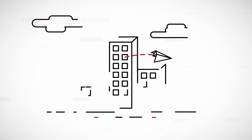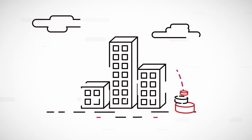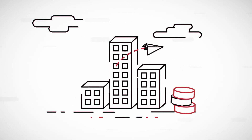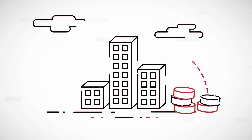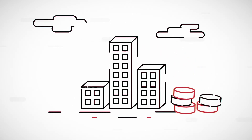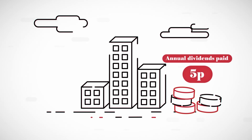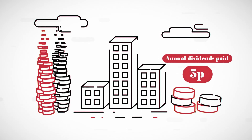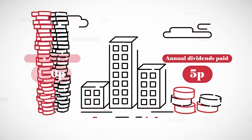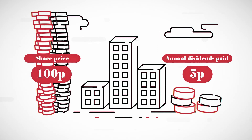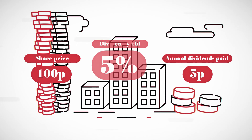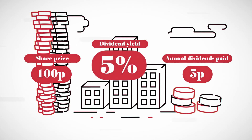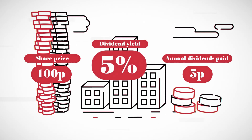Suppose a company pays an interim dividend of 3 pence and a final dividend of 2 pence, making 5 pence in total. If the share price is currently 100 pence, then the dividend yield would be 5%.